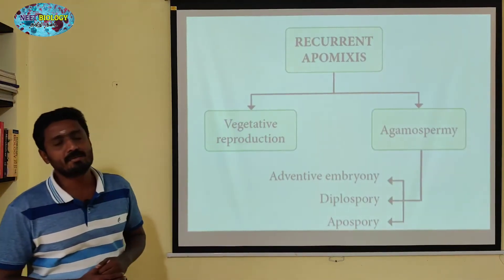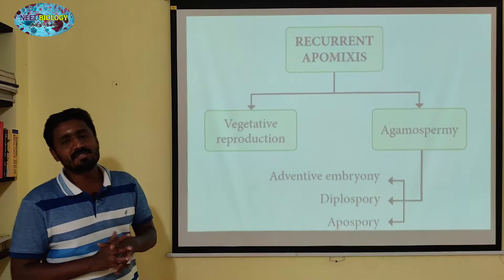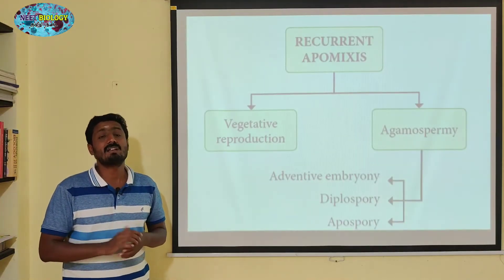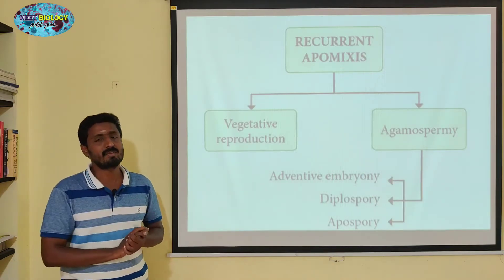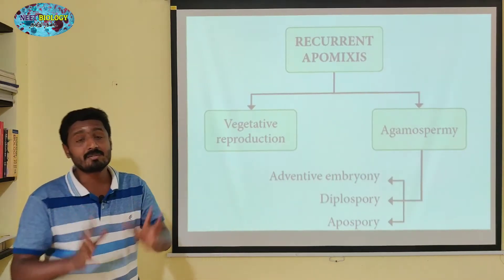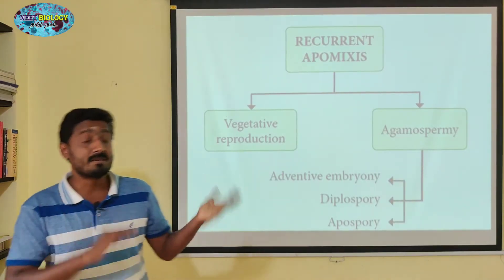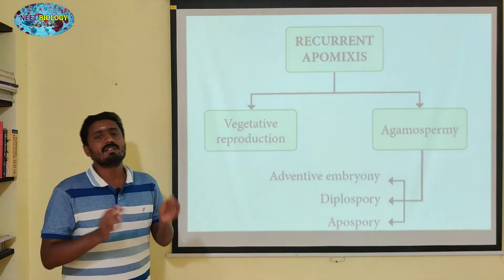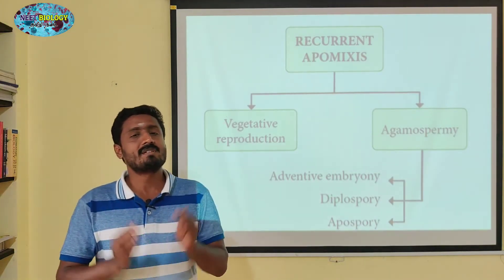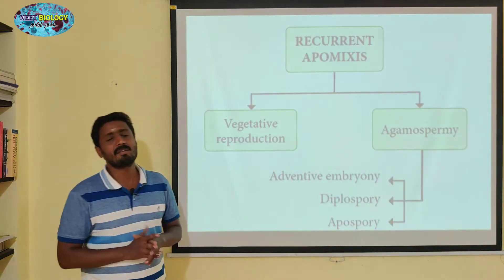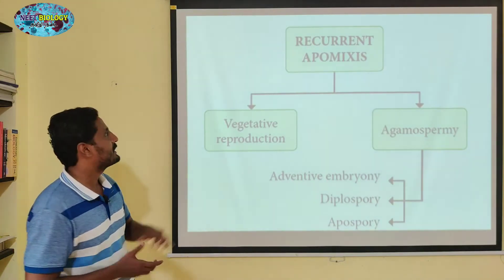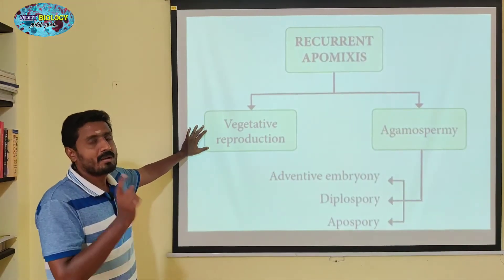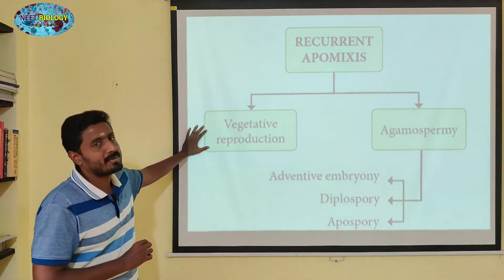This is related to apomixis. Apomixis is a classification first described in 1908. Apomixis has a classifier system. This is a type of vegetative reproduction, which is a type of recurrent apomixis.